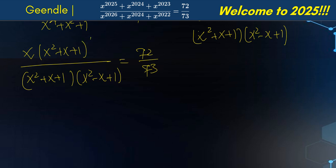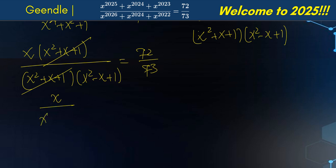The factor x squared plus x plus 1 cancels from numerator and denominator. We're left with x over x squared minus x plus 1 equals 72 divided by 73.